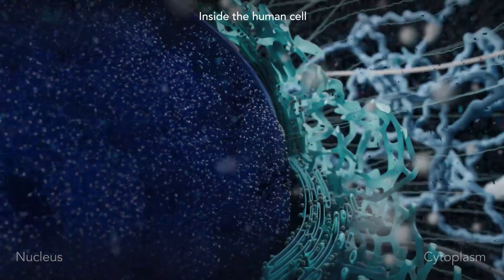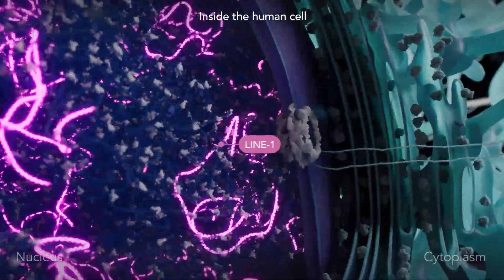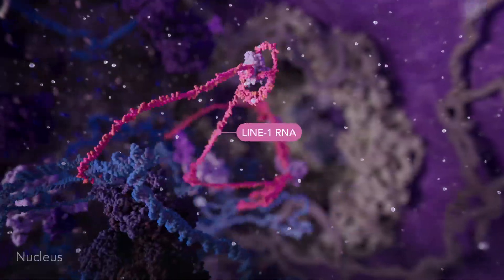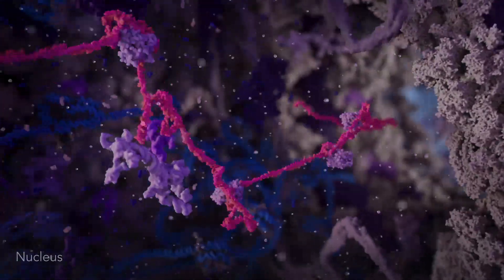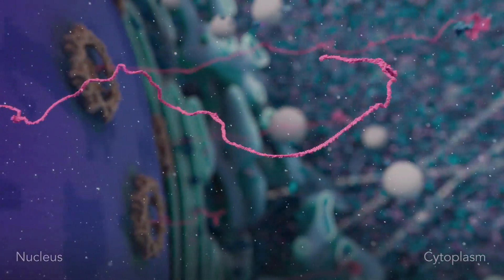The human genome contains approximately half a million copies of a virus-like element known as LINE-1. In certain disease states, LINE-1 escapes repression and generates RNA molecules that migrate to the cytosol.